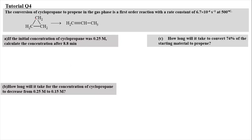For Question 4, the conversion of cyclopropane to propane in the gas phase is a first-order reaction with a rate constant of 6.7 times 10 to the power of negative 4 per second at a temperature of 500 degrees Celsius. The key word is that it is a first-order reaction. You will learn more about this conversion in the organic section later in the semester.